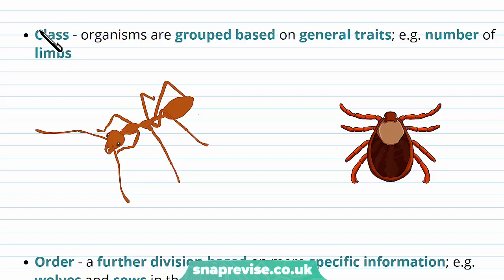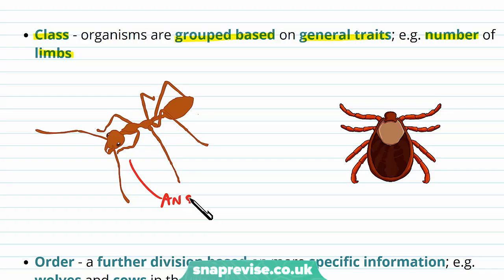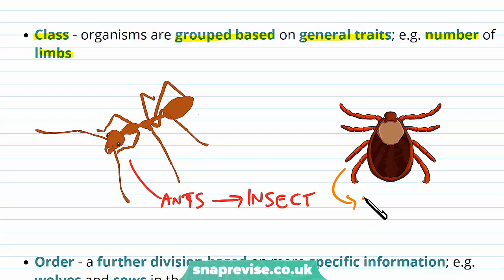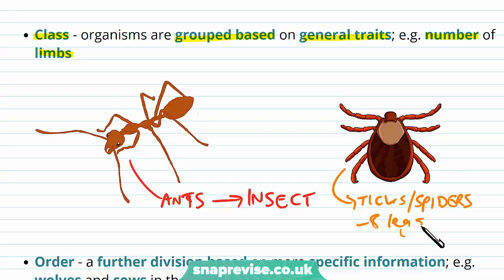The next level is class. Organisms get grouped based on their general traits, for example the number of limbs or eyes they have. Ants are classed as insects because they have a certain number of legs, whereas ticks and spiders have eight legs, so they're classed as arachnids — similar traits grouped together.